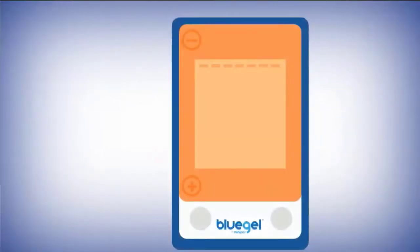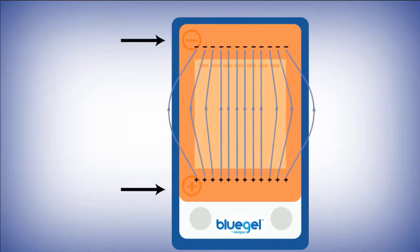In any gel electrophoresis setup, there are two electrodes: a positive electrode near one side of the gel and a negative electrode near the other. When we turn the power supply on, the two electrodes create a difference in charge on the two sides of the gel. This creates an electric field through the gel.